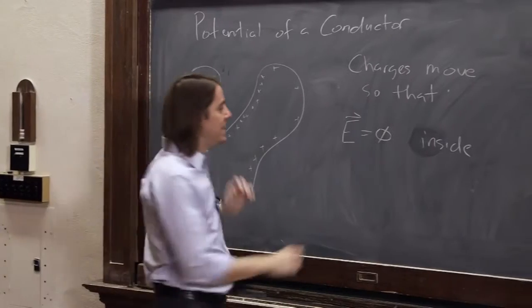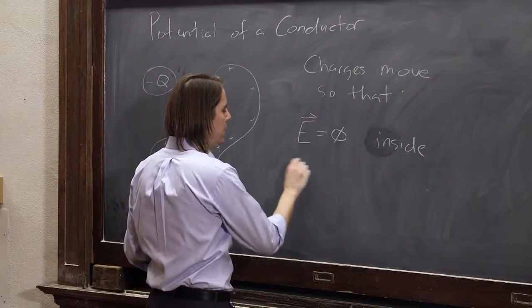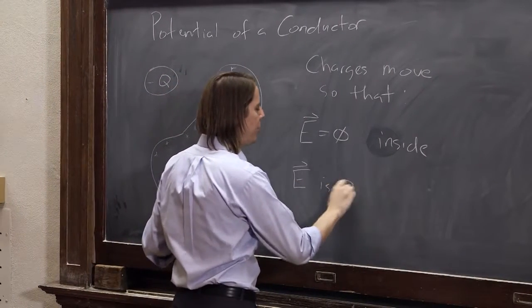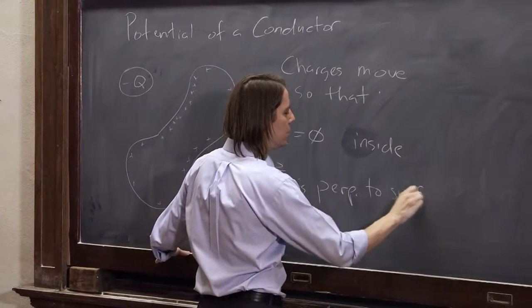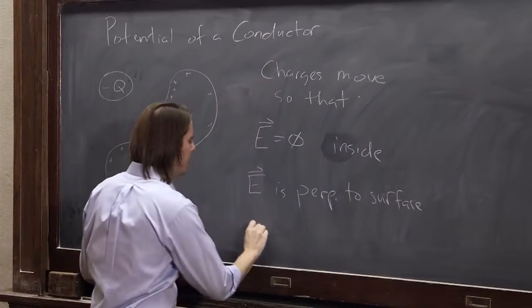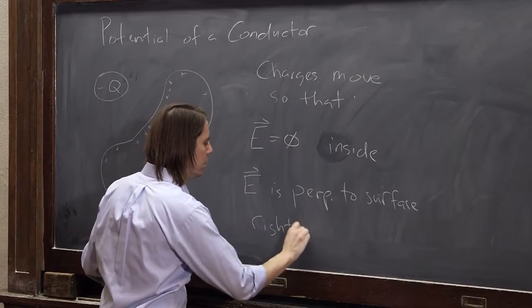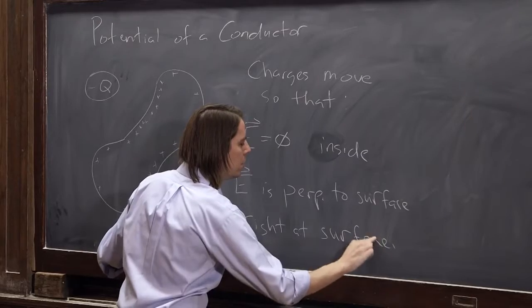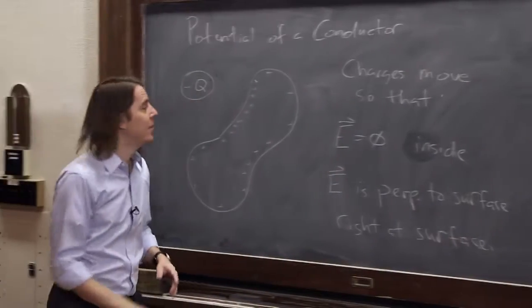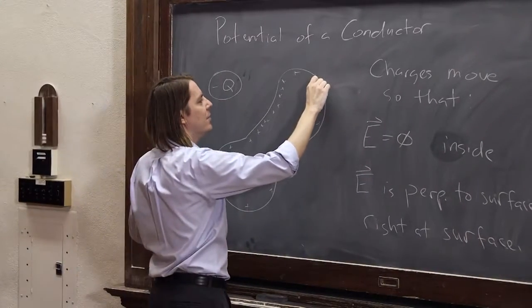And also, the E field is perpendicular to the surface, right at the surface. Okay? So you can have zero field everywhere, and then right when you get out, there's your field.